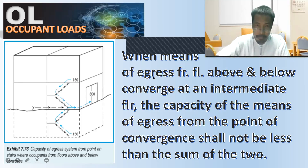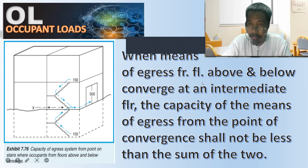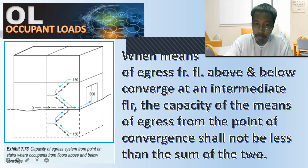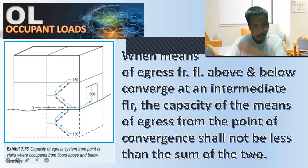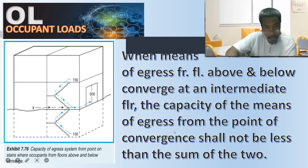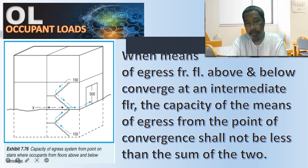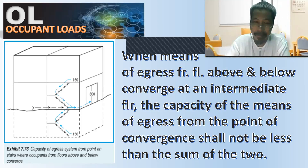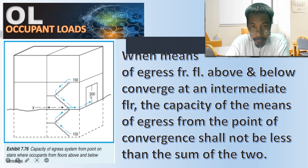When means of egress from floors above and below converge at an intermediate floor, the capacity of the means of egress from the point of conversion shall not be less than the sum of the two. So it could be equal or more, but not less. The minimum requirement is equal — it could be more, but not less — so it could be 300.